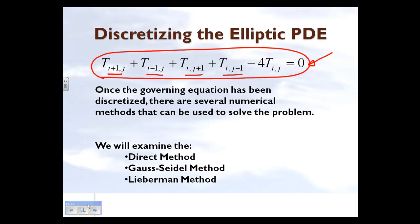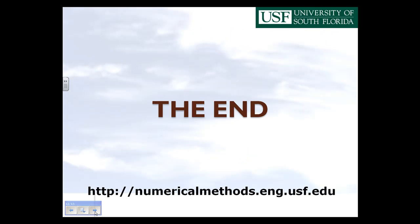There are three different ways to solve this discretized elliptic partial differential equation: the direct method, the Gauss-Seidel method, and the Lieberman method. Each of these methods will be discussed in three separate audio-visual lectures, so depending on whether you want to learn all three or just one method, you will be able to do so. And that's the end of this segment.